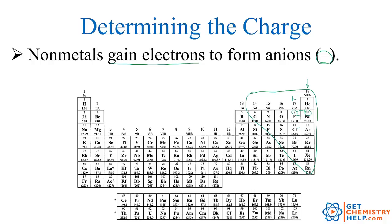How about the nonmetals that are two away? They're all going to become two negative. Oxygen normally has eight electrons and wants as many as neon, which has 10, so it needs to gain two. Sulfur has 16 and wants to gain as many as argon, which has 18, so it becomes two negative as well. Oxygen is two negative, sulfur is two negative, and selenium is the same — two negative.